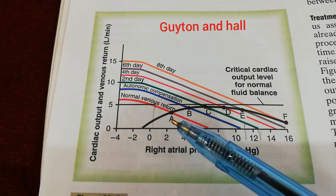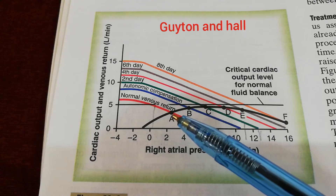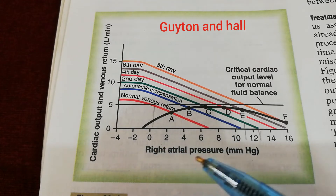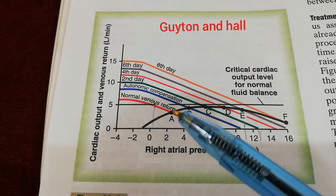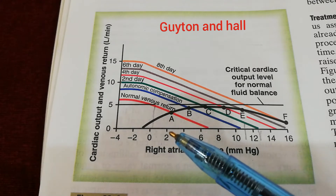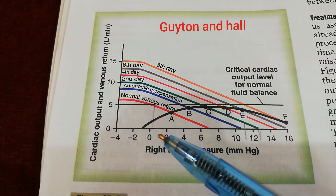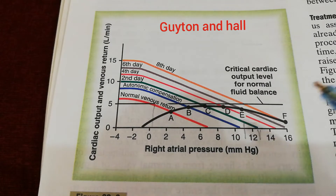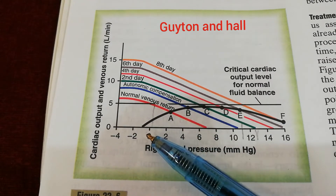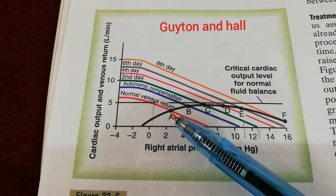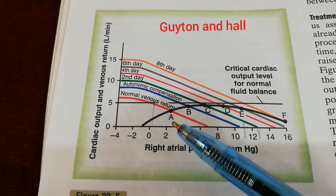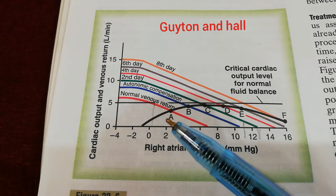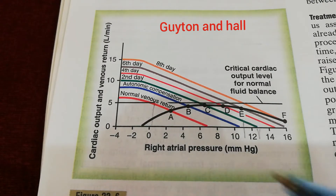At point A, the cardiac output is around three liters per minute, and at this point the right atrial pressure has also increased. It is more than two — normally the right atrial pressure should be around zero. Due to decreased cardiac output, the right atrial pressure has increased to around two or two point five millimeters of mercury.